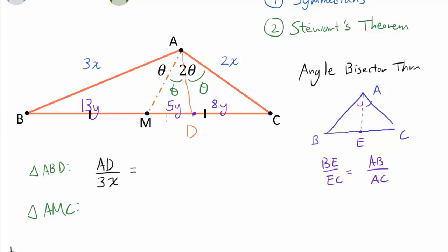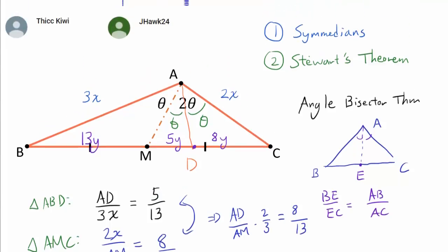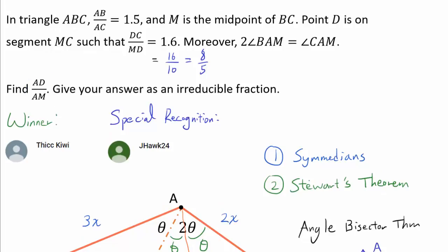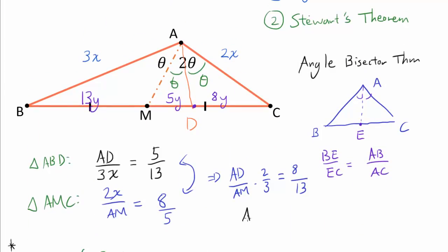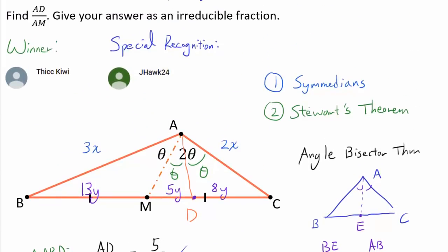And in triangle AMC, so in this triangle, we see that 2X over AM is equal to 8 over 5. And once we multiply these two expressions, we get that AD over AM times 2 thirds is equal to 8 over 13. The 5s go away, so 8 over 13. We want to find AD over AM, if you remember. So that can easily be done by multiplying by 3 halves to both sides. AD over AM is going to be 8 over 13 times 3 halves, or 12 over 13. And we're done with the first solution using C-Median.